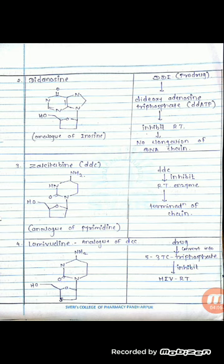Now we are going to see the next drug, zalcitabine, short form DDC. This is the structure of DDC. DDC is an analog of pyrimidine. DDC inhibits the reverse transcriptase enzyme. The reverse transcriptase enzyme is important for DNA chain elongation, but DDC inhibits it, causing termination of the chain.